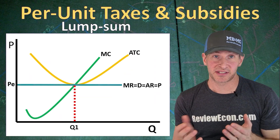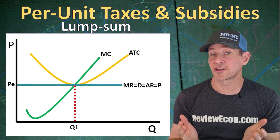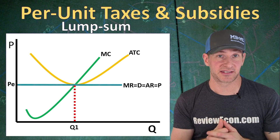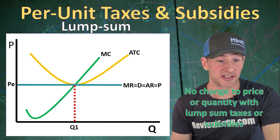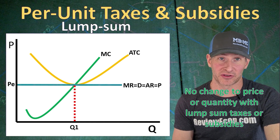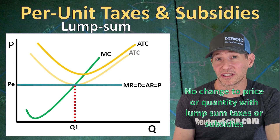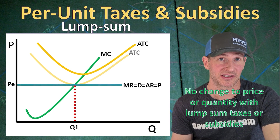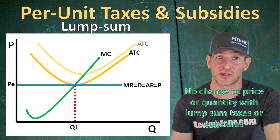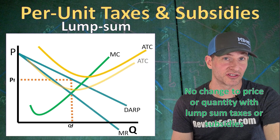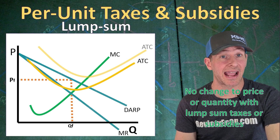Now, if we have lump sum subsidies and taxes, that means the government is charging a flat amount for a tax regardless of how many units of output the firm produces, or providing a flat subsidy just because they are a producer — again, regardless of units produced. With lump sum subsidies and taxes, there is no change in the quantity of output or the price, because only the average total cost curve moves and not the marginal cost. So a lump sum tax on a perfectly competitive firm only shifts the ATC upward and doesn't change the profit-maximizing quantity. A lump sum subsidy lowers the ATC, but again no change to price or quantity. On the monopoly graph the same applies — ATC shifts up with a lump sum tax and down with a lump sum subsidy, but the profit-maximizing price and quantity don't change.